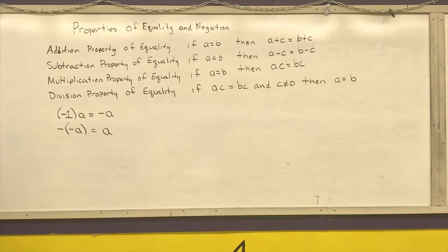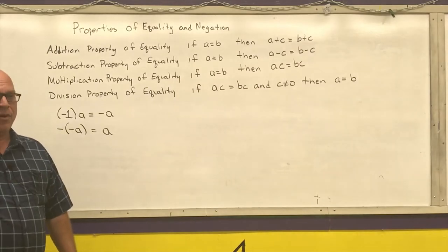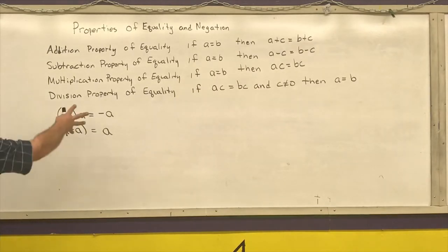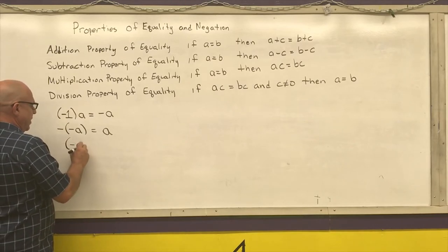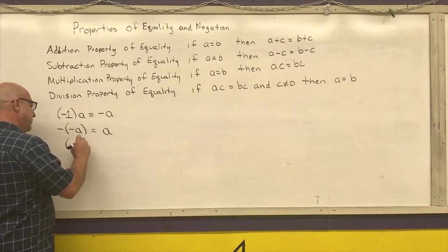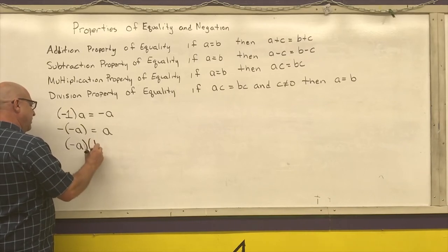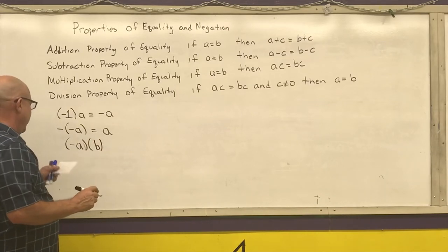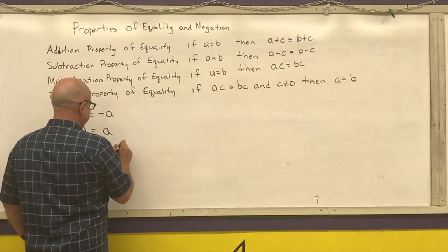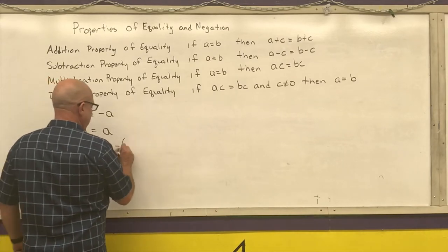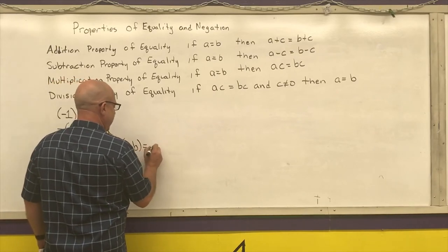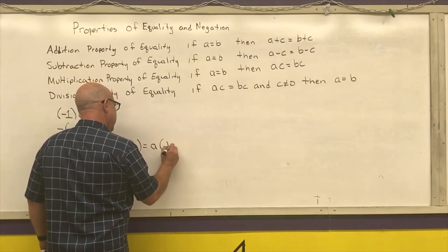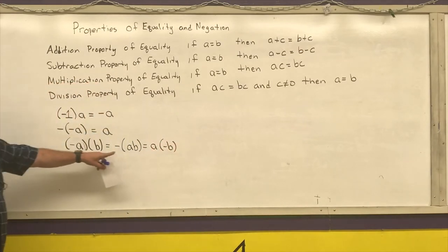And now we're going to use some of the properties of real numbers with these two negation properties. If I have a negative number times a positive number, that can be rewritten as the negative of that product, or I can move that negative sign anywhere in those three places.